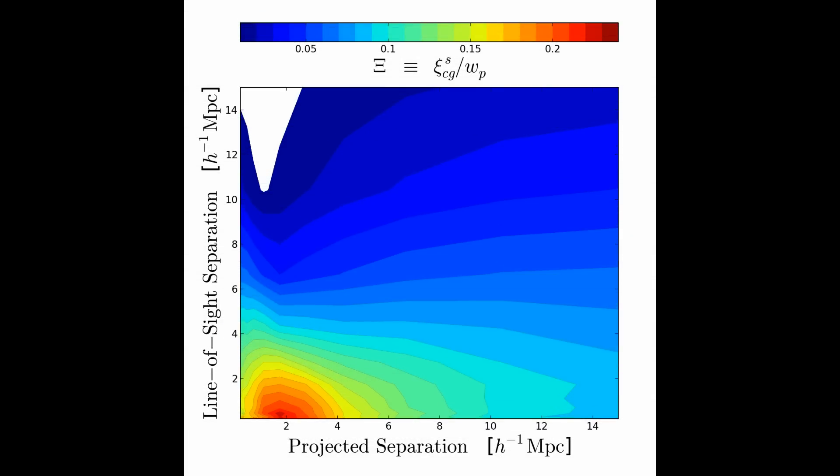To highlight the kinematical features, here we divide ξ_cgs by the projected cluster-galaxy cross-correlation function W_p at each projected separation. Since W_p is the integration of ξ_cgs along the line of sight, the contours basically illustrate the compactness of a galaxy line of sight distribution around clusters, which peaks around projected separation of 2 h-inverse megaparsec because of strong galaxy infall.